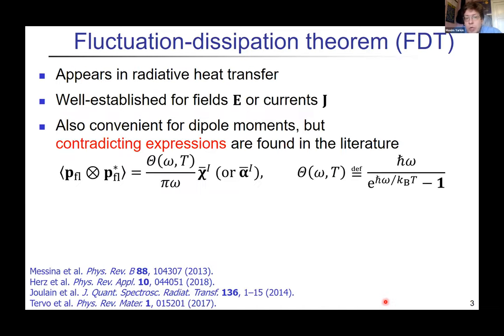When we go to fluctuation dissipation theory, which is something you probably never need but if you want to consider radiative heat transfer or Casimir forces, it's very convenient. You can compute quantum quantities in terms of classical electrodynamics. This theorem is well established for fields and currents, but for a dipole or system of point dipoles it's convenient to write it in terms of fluctuating dipole moments. In the literature you see different expressions, and the problem is that you have either χ or α here, and the difference can be quite significant.